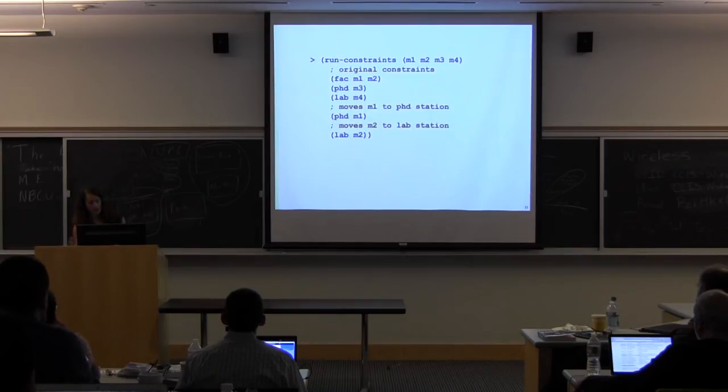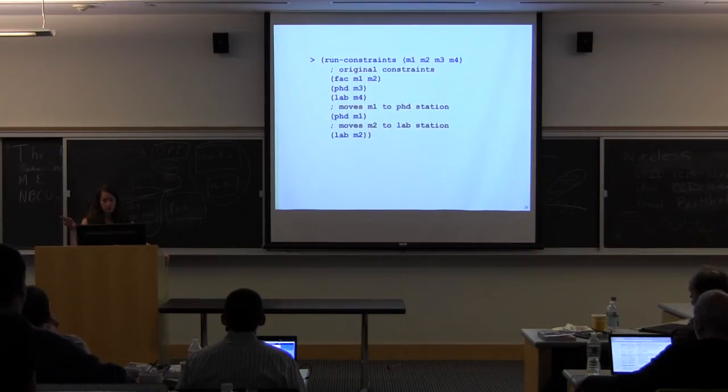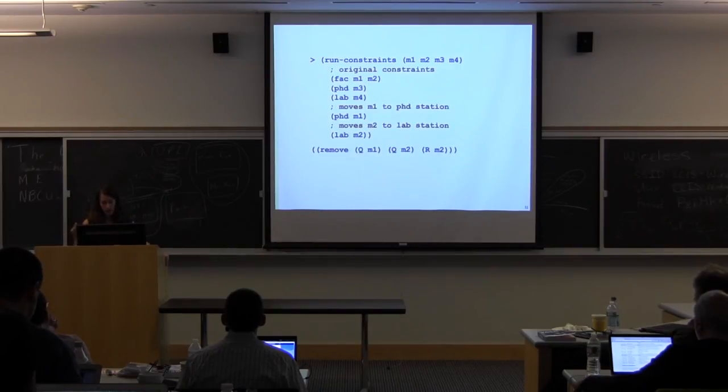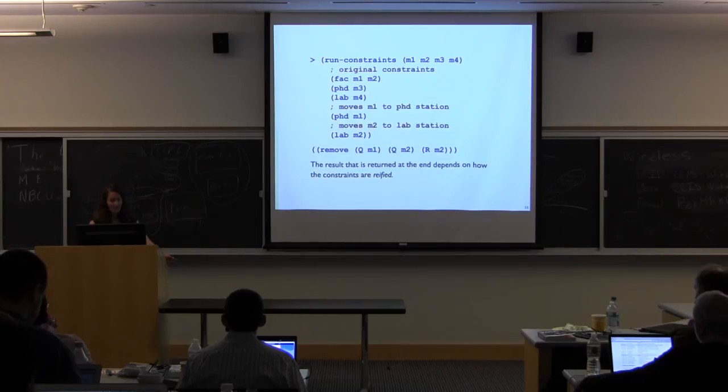And so while I'm running my program, I move the PhD, the faculty machine to a PhD location. And then I move a faculty machine to a lab location. And then C-Cannon spits out remove Q from M1, remove Q from M2, and remove R from M2. And that's what we expect.